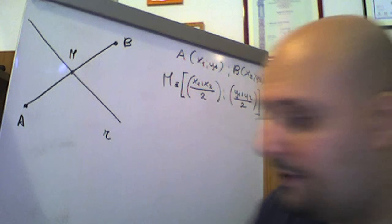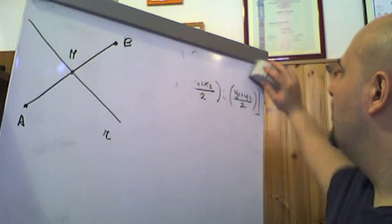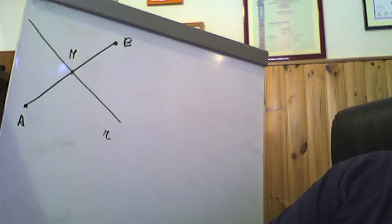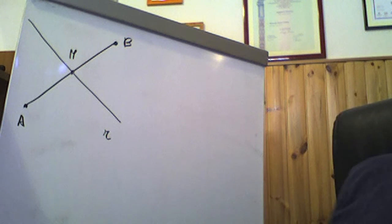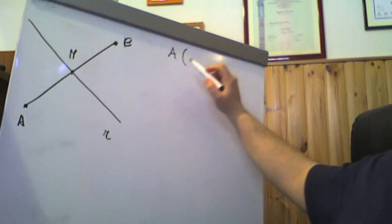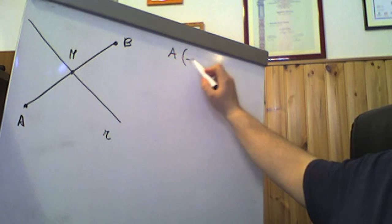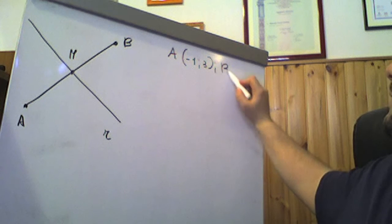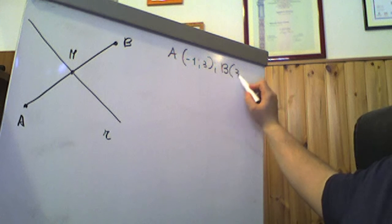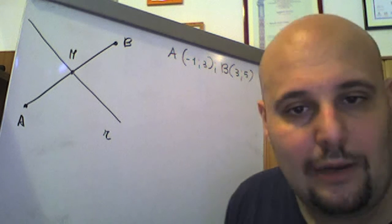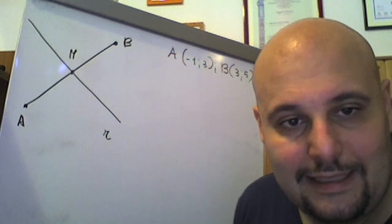Andiamo a fare un esempio. Supponiamo di considerare due punti: A di coordinate (-1, 3) e un punto B di coordinate (3, 5). Supponiamo di volere calcolare l'equazione dell'asse del segmento AB.